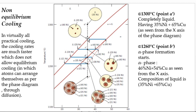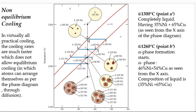Cooling down to the liquidus, the first alpha crystals start forming. Dropping a horizontal line to the solidus gives the alpha composition as 46% nickel and rest copper. The liquid composition is found from the intersection with the liquidus at point B'.